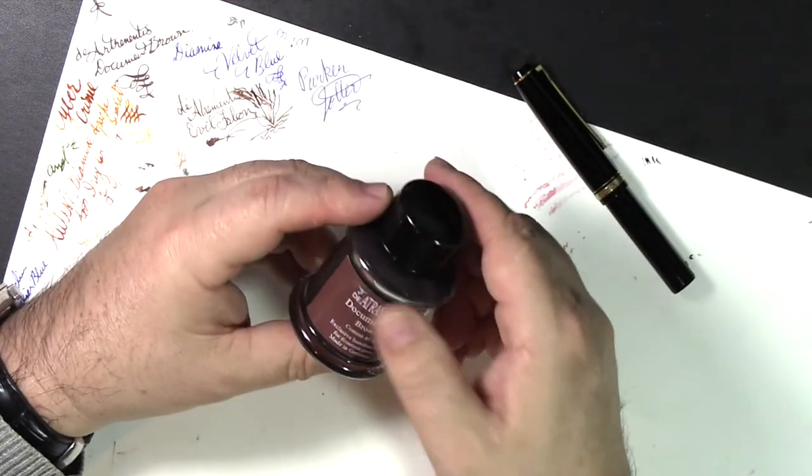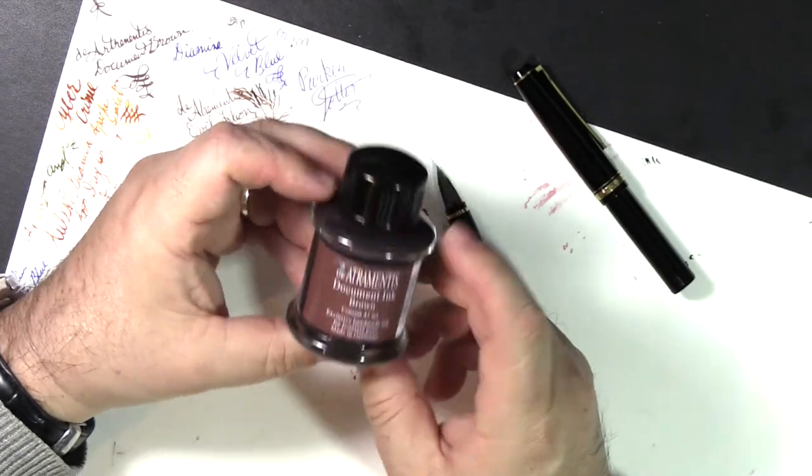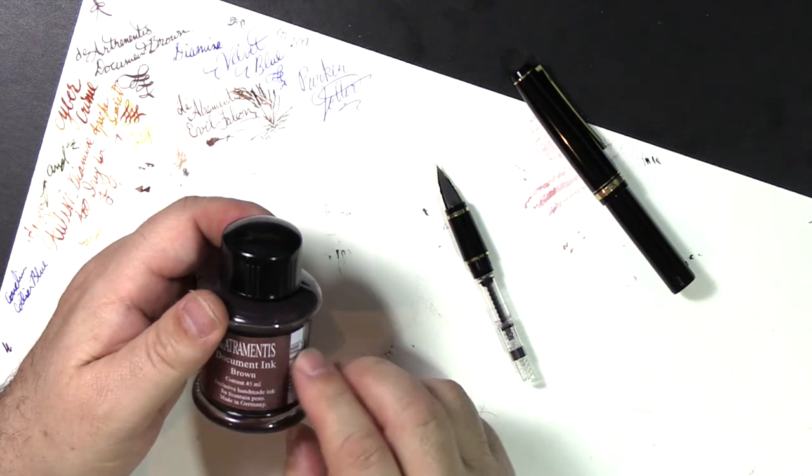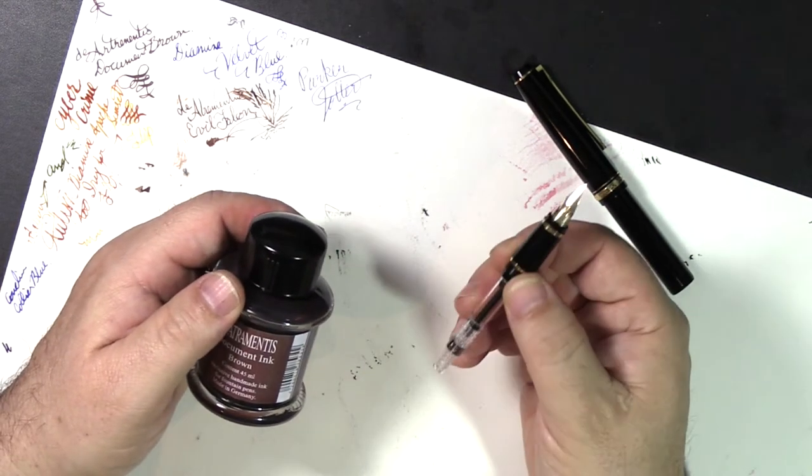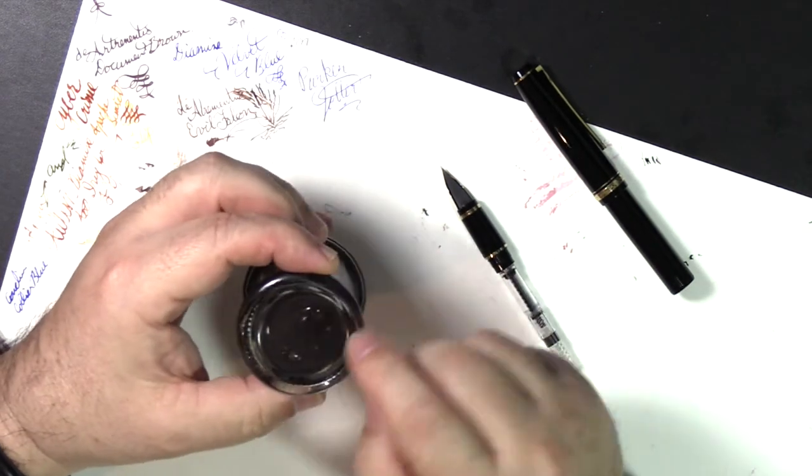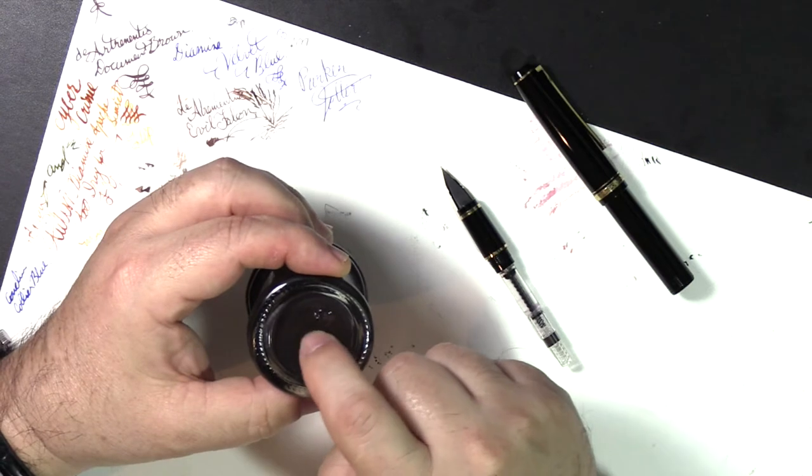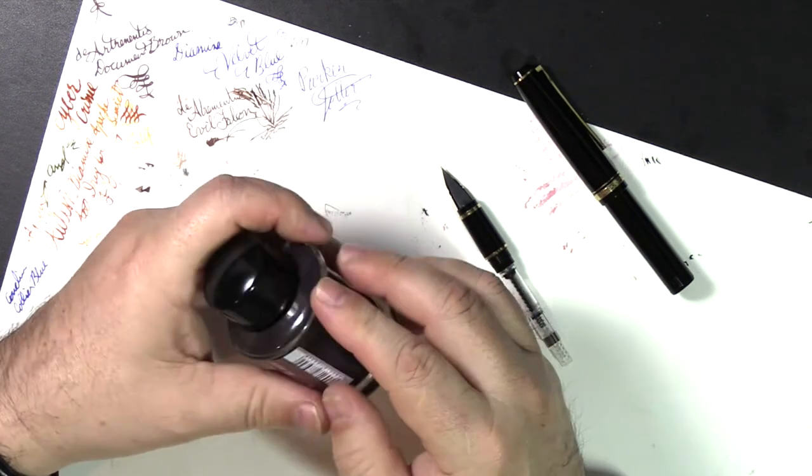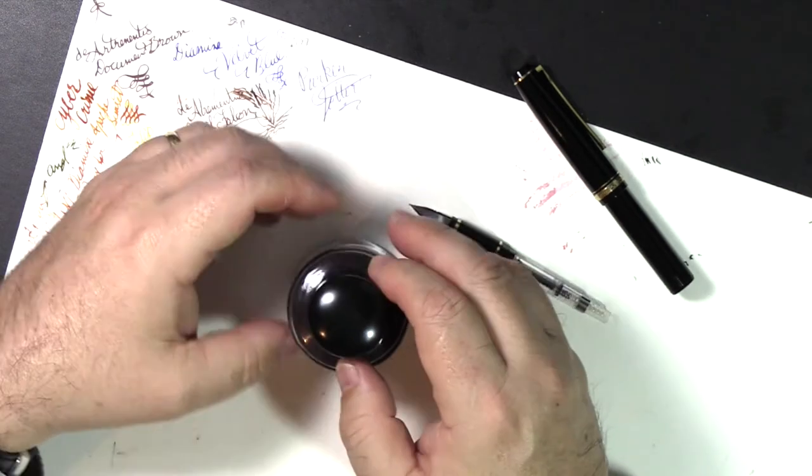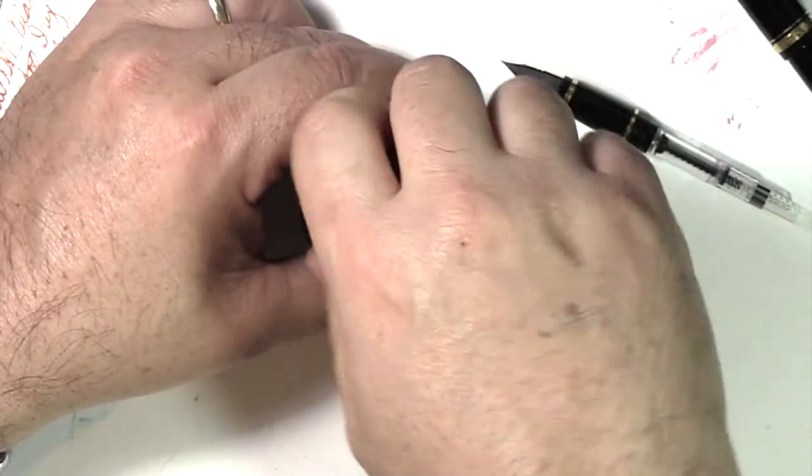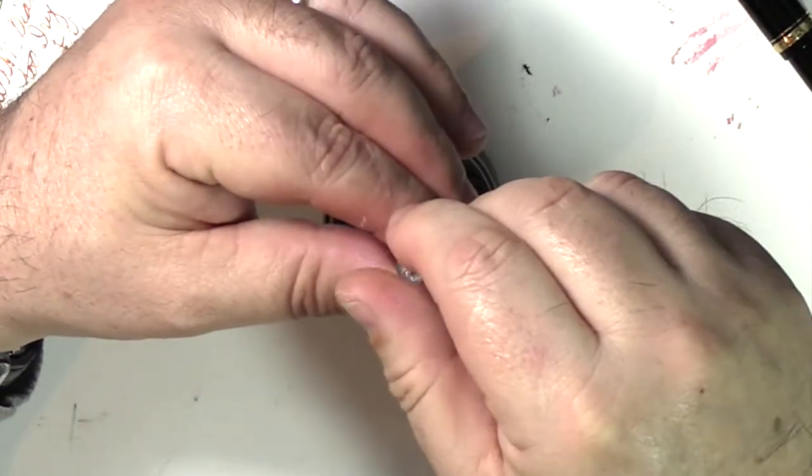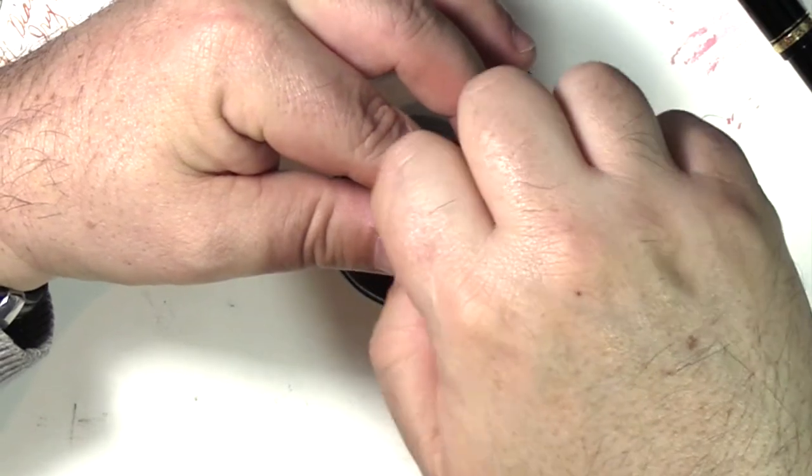Now we're going to ink this pen up, and we're going to use this Diamine Document Brown. Now if everyone says you're going to use those permanent inks in this pen, I can completely disassemble this pen and I can get it clean. I've done it numerous times. I like to check the bottom of the bottle because sometimes there'll be a little sediment on the bottom. If there is, you just have to agitate the bottle gently until you can be fairly sure that you've got a good mix. So let's open this bottle.